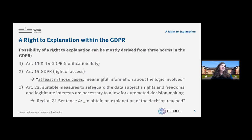The second or third norm where you can look for the right to explanation is Article 22, which is about automated individual decision-making. It says that decisions based solely on automated processing require suitable measures to safeguard the data subject's rights and freedoms and legitimate interests. This norm is supplemented by Recital 71, sentence 4, which says 'to obtain an explanation of the decision reached.' This recital is the only part in the GDPR where you can really find the word 'explanation,' and it helps us understand what is really meant by 'suitable measures' within Article 22.